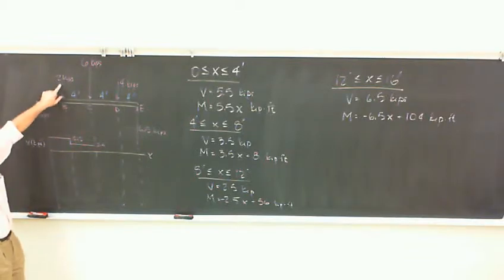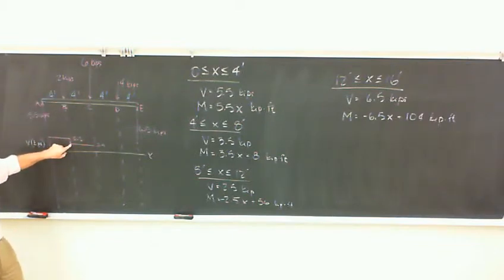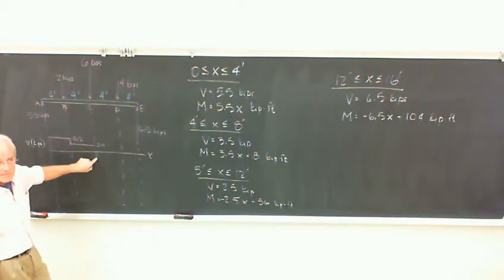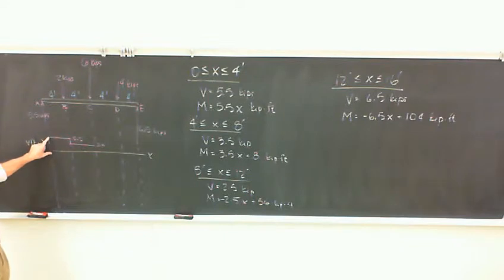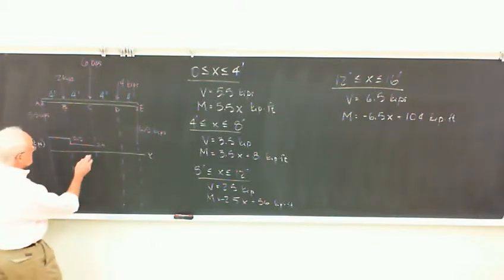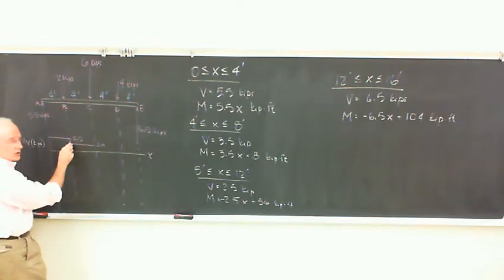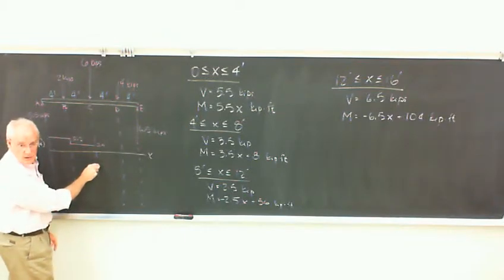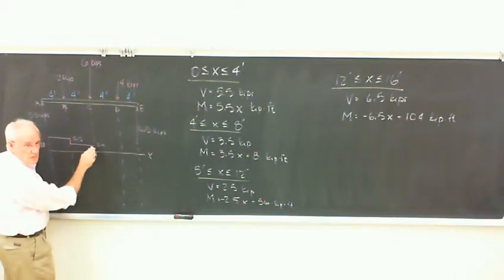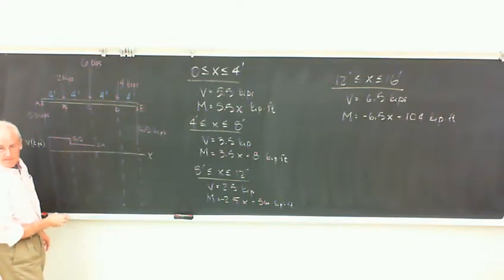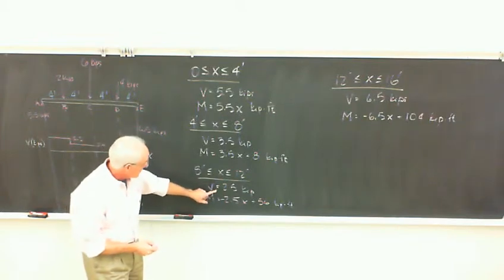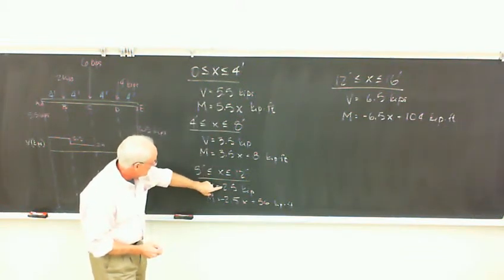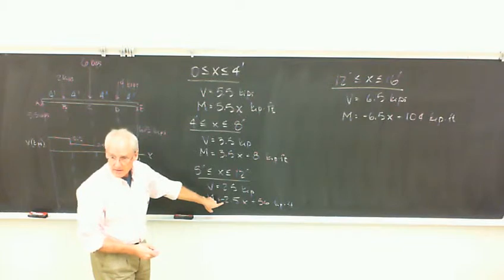Then we hit this downward load of 2 and we went down 2. Now we have a downward load of 6, but we don't go down 6. So either this relationship between shear and loads doesn't hold, or we need a new understanding. If we jump down 6 from 3.5 that gives us negative 2.5. So maybe this should be negative, which might fix that.